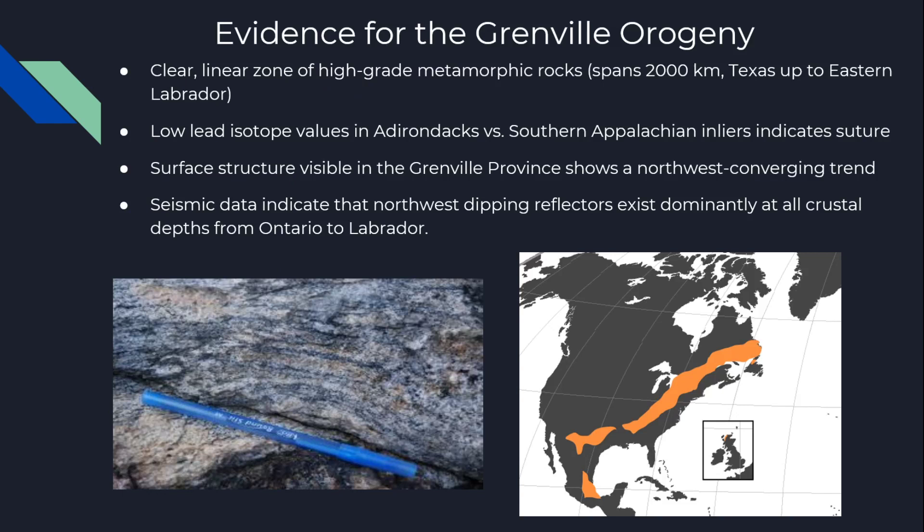Starting with the evidence for the Grenville Orogeny — looking at this image, we can see a clear northeast-trending span of high-grade metamorphic rocks, going from Texas all the way to eastern Labrador. In these high pressure belts we find different lead isotope values. Specifically, in the Adirondacks compared to the southern Appalachians, these lead isotope values are below the average for crustal growth, showing derivation from a mantle region depleted in uranium. We can use this to interpret where the initial rock was being sourced from.